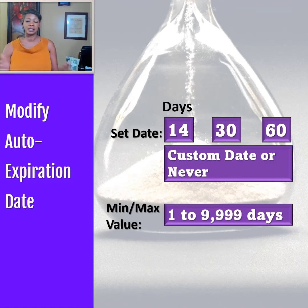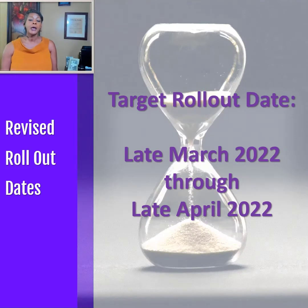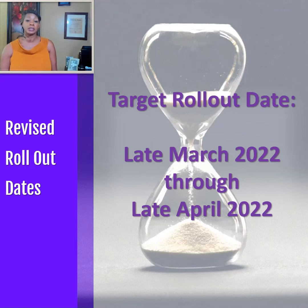Choose a date — 90 days or even up to 365 days if you feel like keeping the information for about a year. Microsoft's target rollout date changed to March 2022. They want to work with some early adopters to make sure there are no issues before they roll it out in April 2022.